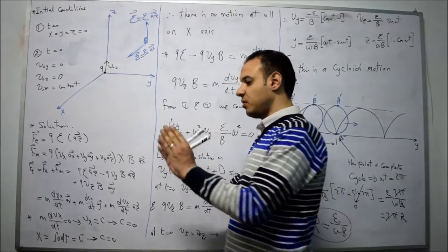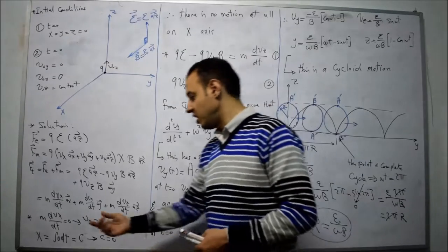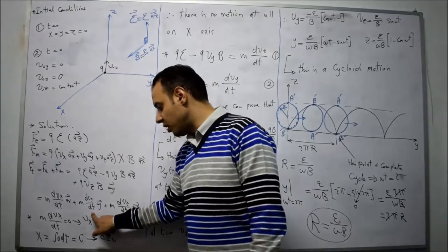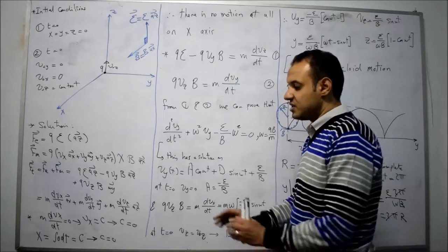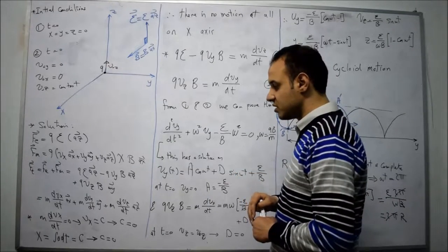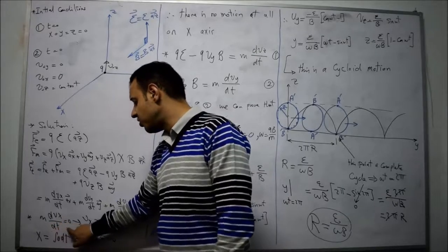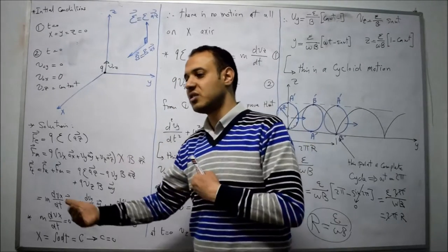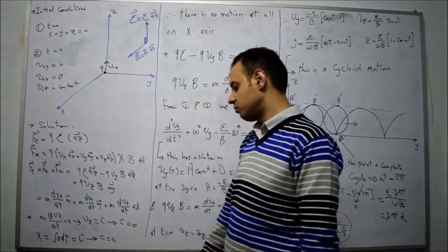Any force equals mass multiplied by acceleration. We assume acceleration has three components as well: dVx/dt in x, dVy/dt in y, and dVz/dt in z. Equating the x components on both sides, we find m·dVx/dt equals zero. Integrating, Vx equals a constant. At t equal to zero, the velocity in the x direction is zero, so the constant equals zero, meaning Vx is zero.